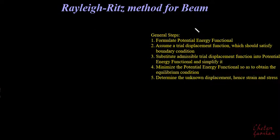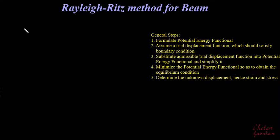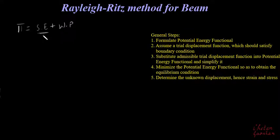We have already solved some problems on bars using the Rayleigh-Ritz method. Now let us see how to solve a beam problem using this method. The steps remain the same with slight modifications. Our first step tells us that the potential energy functional pi is strain energy plus work potential, and the strain energy for a beam will not be the same as that for a bar.